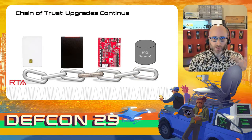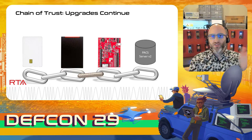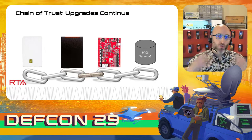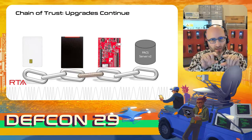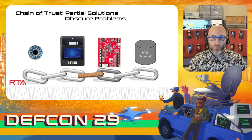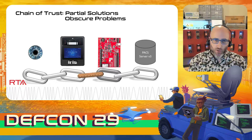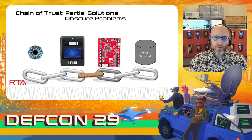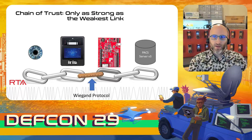The chain of trust continues aging as different components are replaced. We upgrade cards and readers, and might also upgrade door controllers and server-side software for new functions and capabilities. But there's one particular link that keeps aging — by the time systems are in biometrics territory with facial recognition and iris scanning, many systems historically were still using Wiegand. Since a chain is only as strong as its weakest link, that is of concern. Recently this has begun to be addressed with OSDP, the replacement for Wiegand, offering bi-directional communication and encryption to improve the overall physical security chain.